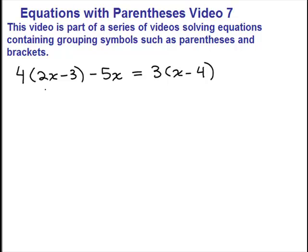What we need to do is simplify each side. So on the left-hand side here, we're going to have to distribute our 4. So we have 4 times 2x, that is 8x. And then 4 times negative 3, or you could think of it as minus 4 times 3, is negative 12. And then I've got this minus 5x.